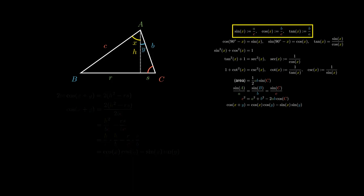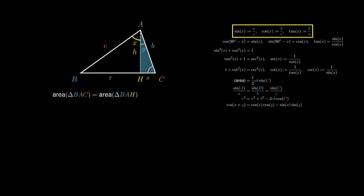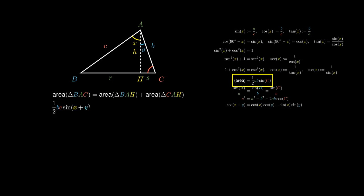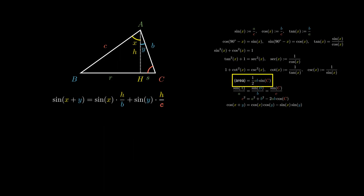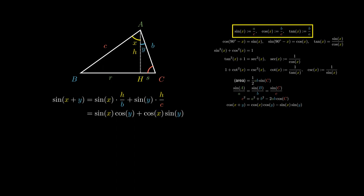We can derive an analogous formula for sine of X plus Y. The area of the entire triangle BAC equals the area of triangle BAH plus the area of triangle CAH. Using the area formula, the left-hand side is half BC times sine of X plus Y, while the area of BAH is half C times H times sine X, and the area of CAH is half B times H times sine Y. Isolating sine of X plus Y and cancelling terms, we obtain sine X times H over B plus H over C times sine Y, which simplifies using basic trig to cosine Y and cosine X respectively, giving sine X cosine Y plus cosine X sine Y.